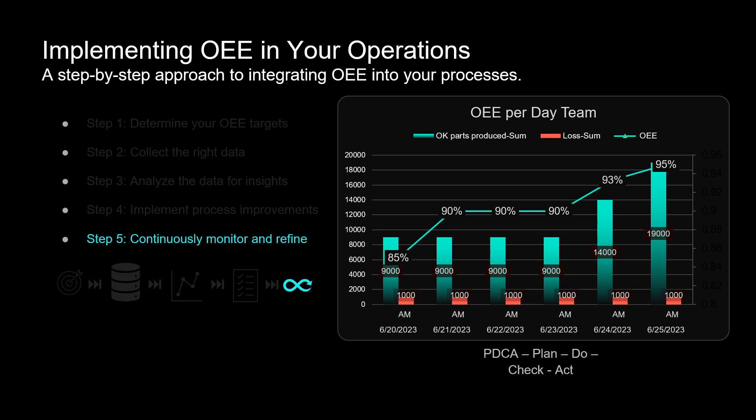Step 5: regularly review performance metrics and feedback from operators to identify areas for further improvement. Adjust strategies and processes as needed to optimize efficiency and maintain high levels of productivity.